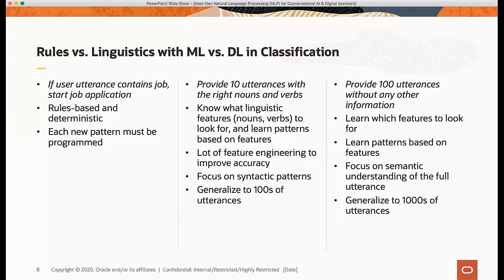The third approach is deep learning: you provide around 100 utterances without additional annotations, and the neural network learns what features to look for. A key innovation is word embeddings and contextual embeddings, which help understand semantic meaning — distinguishing 'riverbank' from 'banknote,' for example. This approach generalizes from hundreds of training utterances to thousands of unseen ones and is very effective. Transfer learning specifically helps make this third category powerful.